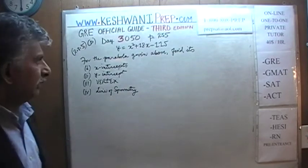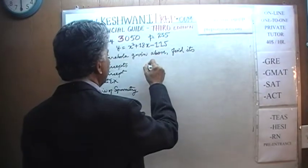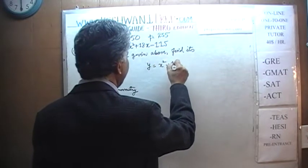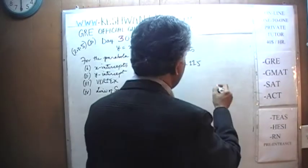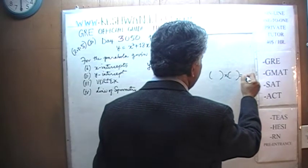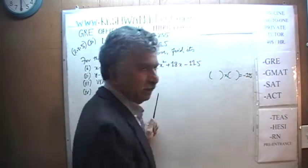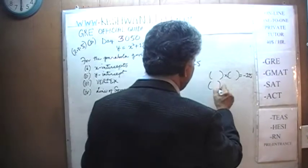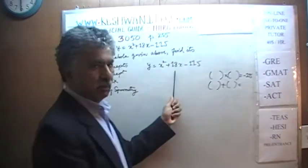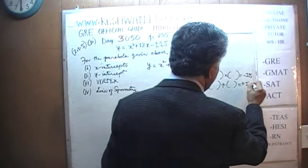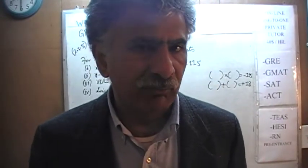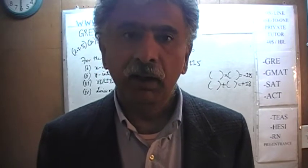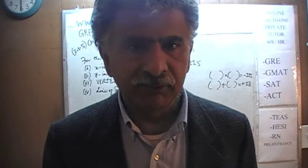In order to find the x-intercept, we have to factorize the equation of the given parabola: x² + 18x − 115. We are looking for two numbers whose product has to be negative 115, and whose sum has to equal positive 18. Can you think of two numbers such that when we multiply them we get −115, and when we add them we get +18?